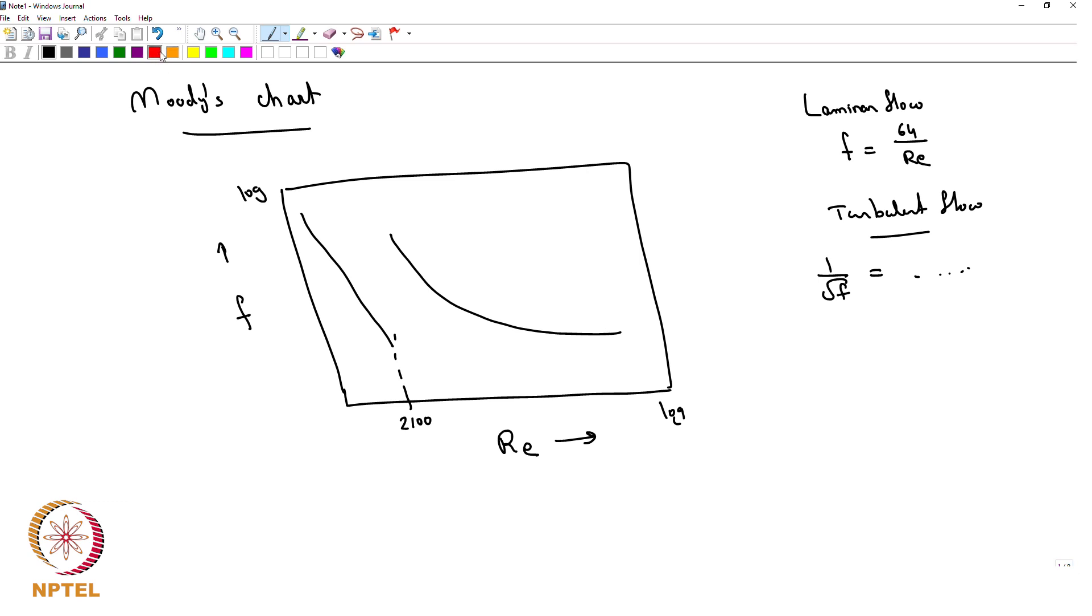So this is for turbulent flow but in a smooth pipe. What happens is that if you start incorporating the roughness factor, you are going to get curves like that.